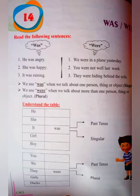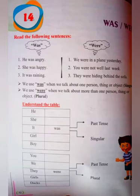With you, we, they, girls, and plural nouns, we use 'were'. With he, she, it, girl, boy, and any singular person, we use 'was'. And with you, we, they, girls, and plural nouns, we use 'were'.